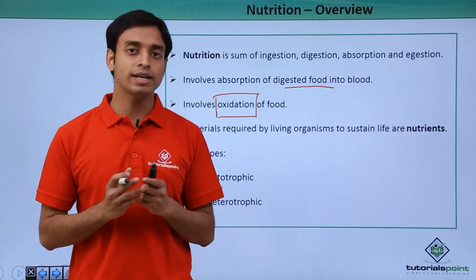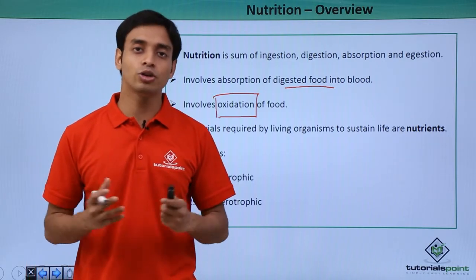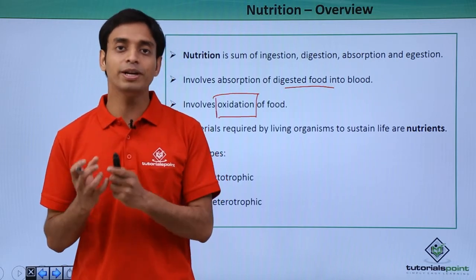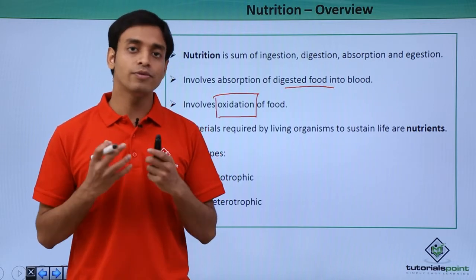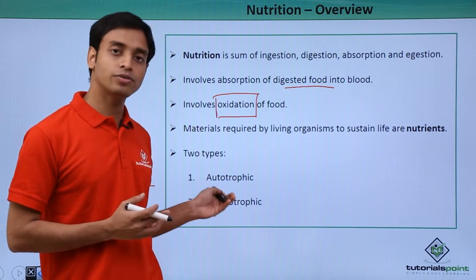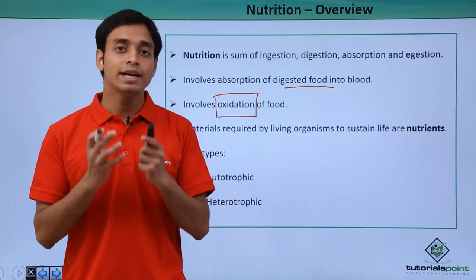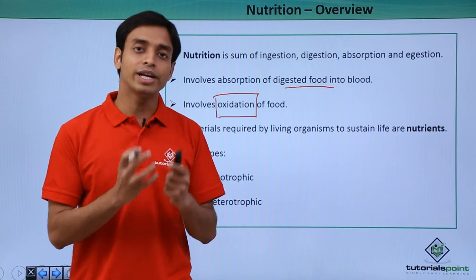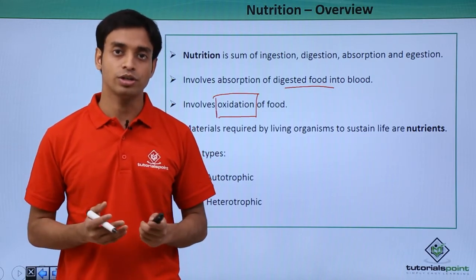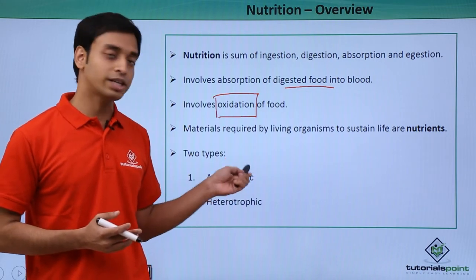Heterotrophic mode of nutrition means these organisms, which are heterotrophs, cannot prepare their own food. They have to depend on already ready-made food, mostly from the producers or the autotrophs. So heterotrophic mode of nutrition means that already prepared food is used for the nutrition process.